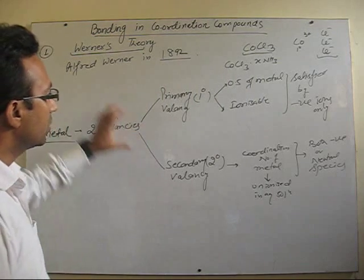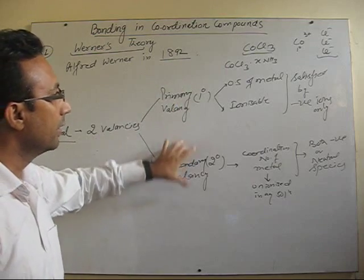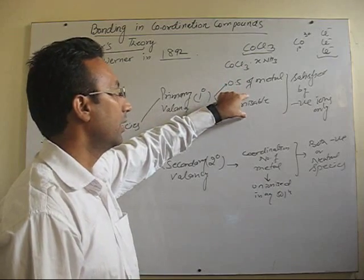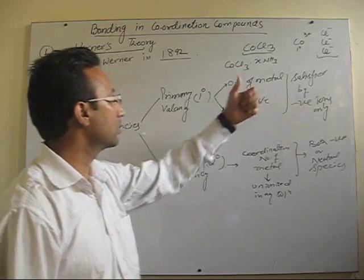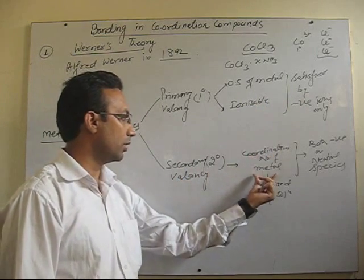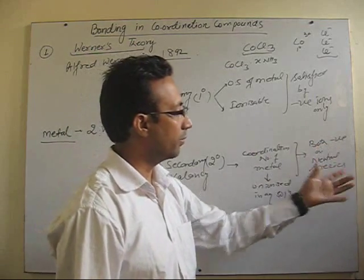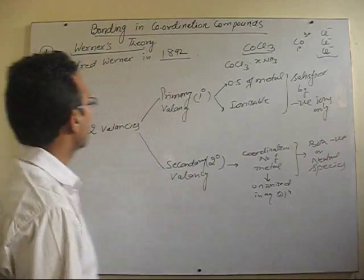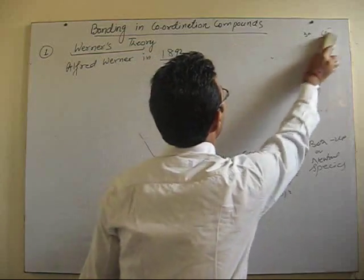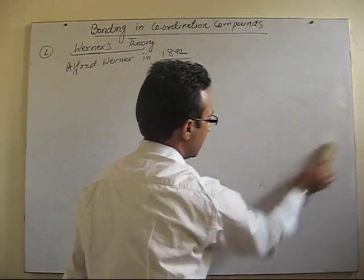So this is the gist of Werner's theory: metal showing two types of valency — primary and secondary. Primary corresponds to the oxidation state of the metal; it is ionizable and satisfied by only negative ions. Secondary valency corresponds to the coordination number of the metal; it is unionized in aqueous solution and can be satisfied by both negative and neutral species. Let's now see how the structures of the compounds are given by Werner based on his postulates.